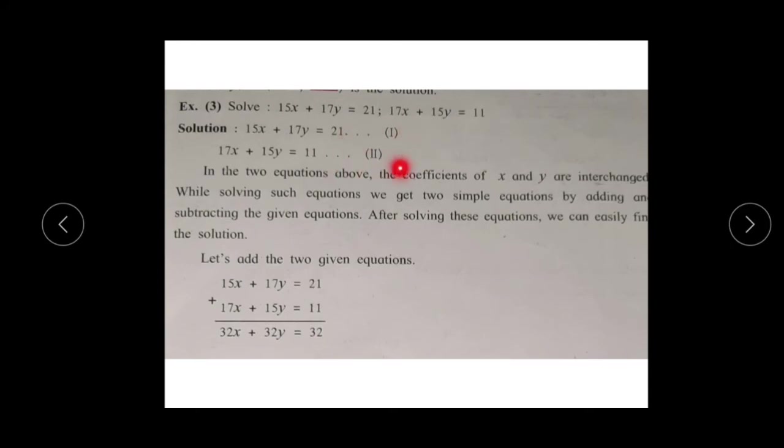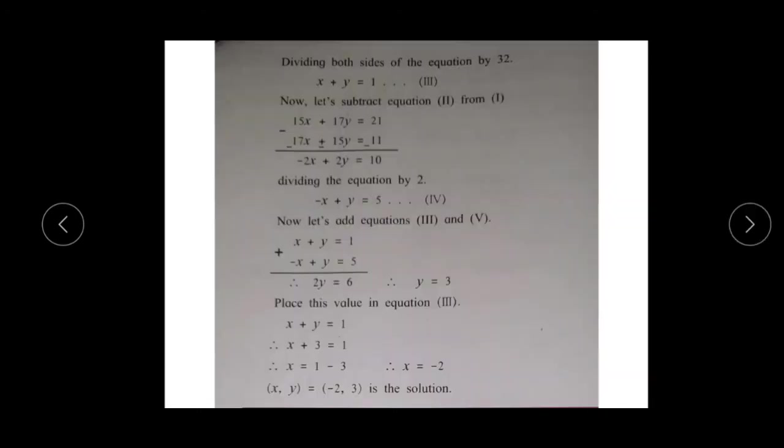Number the equations 1 and 2. Adding equations 1 and 2, you get 32x + 32y = 32. Divide this equation by 32 to get x + y = 1, which is equation number 3. This is your first step.